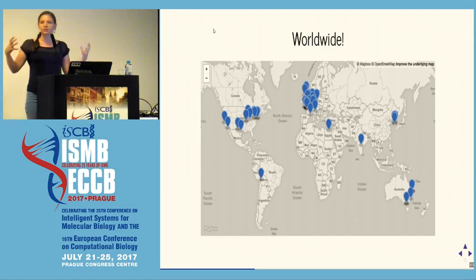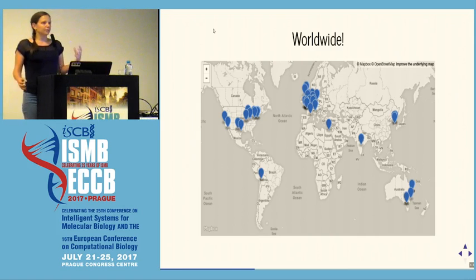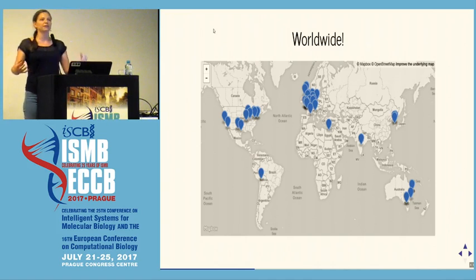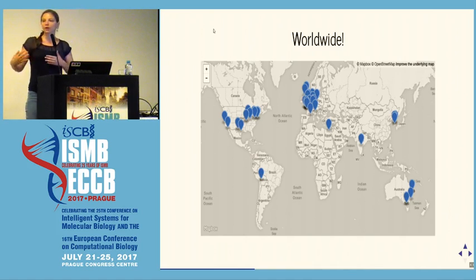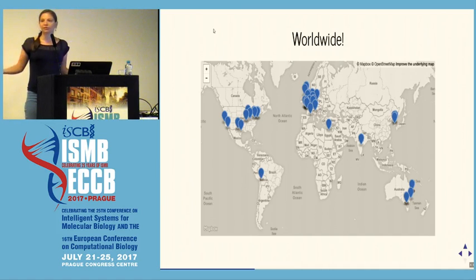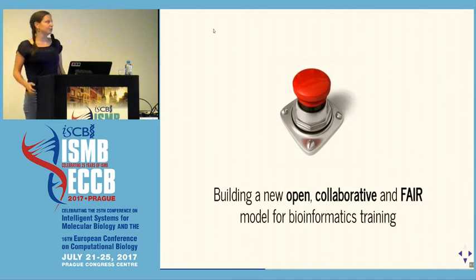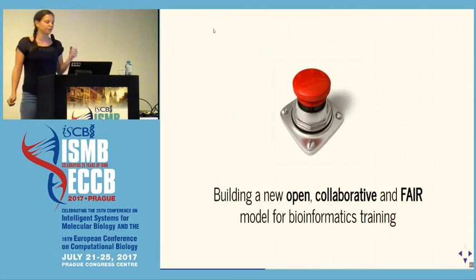It's a nice network, but it was not enough. The Galaxy Training Network was aggregating many resources from different platforms, so there was a lot of redundancy in the content, and it was difficult to keep up to date because tools evolve quite fast in bioinformatics. So last year, during the Galaxy Community Conference, the Galaxy Training Network decided to build a new open, collaborative, and FAIR model for bioinformatics training.